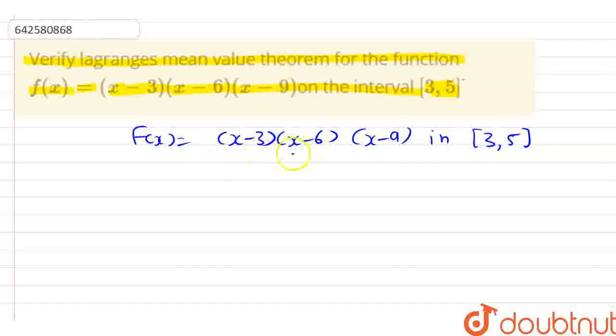Now, here we will solve these two brackets. So after solving these two brackets, here we have (x - 3)(x² - 15x + 54). Sorry, let me correct it here. This is 54.